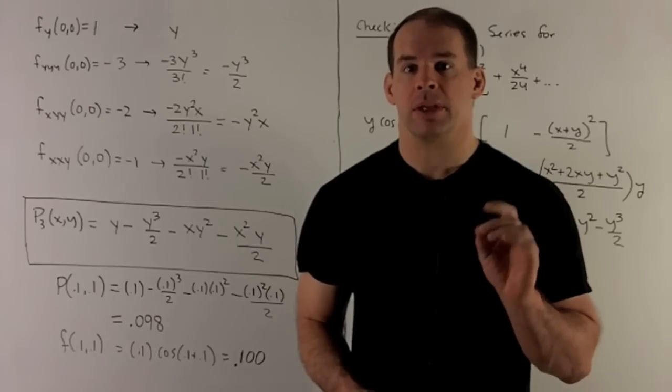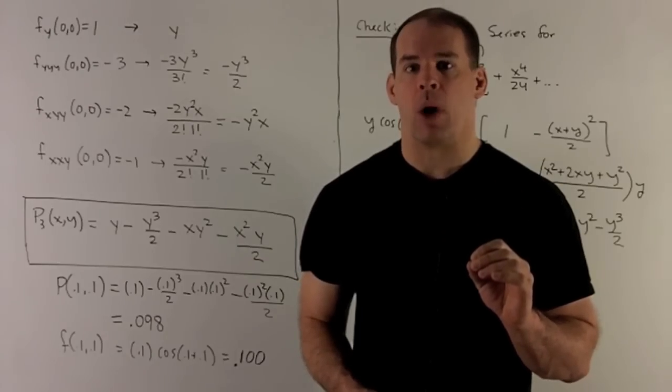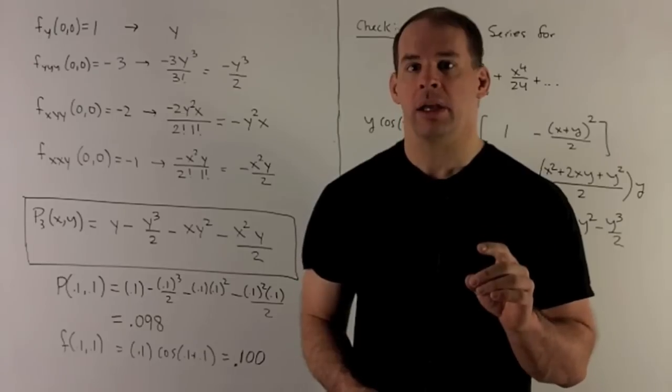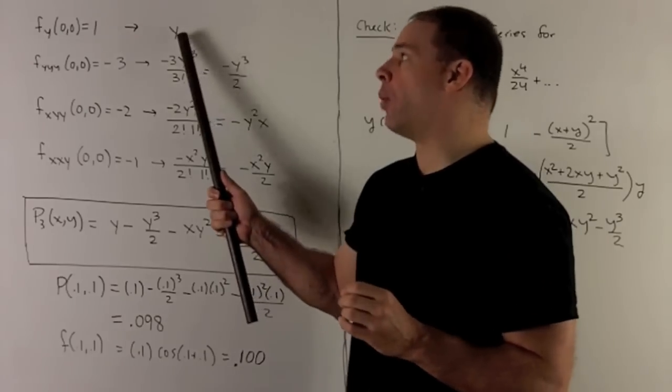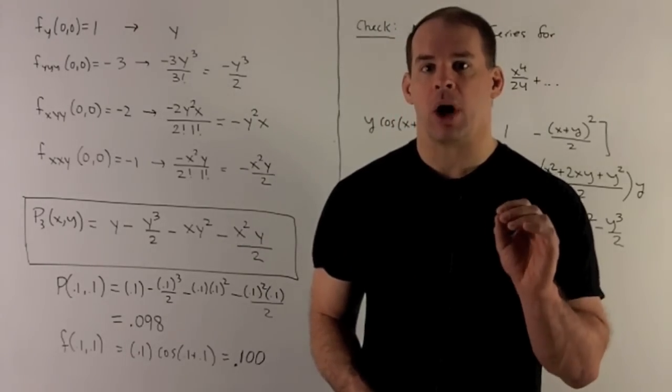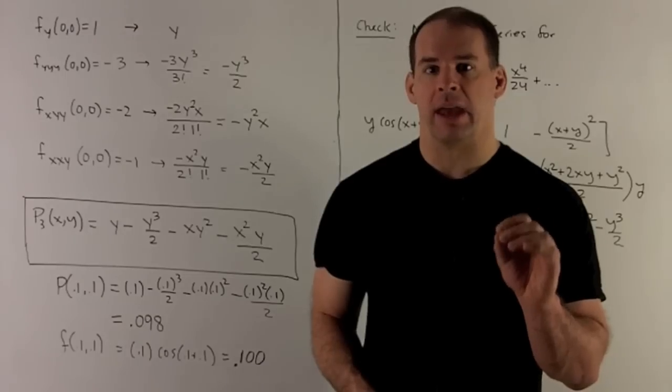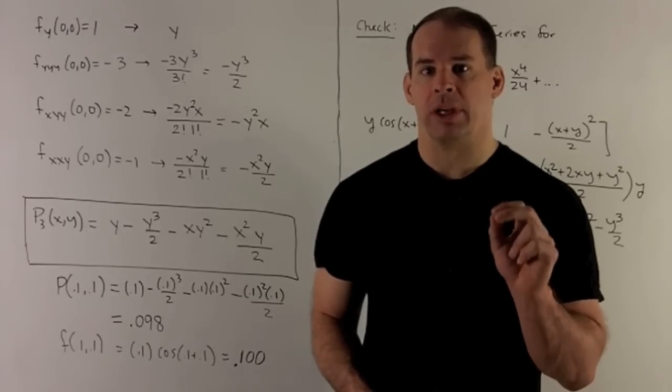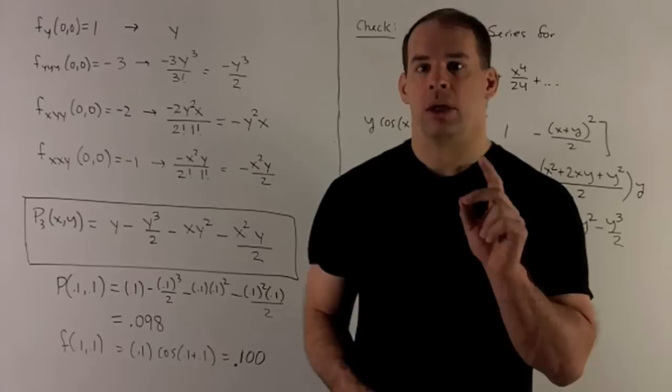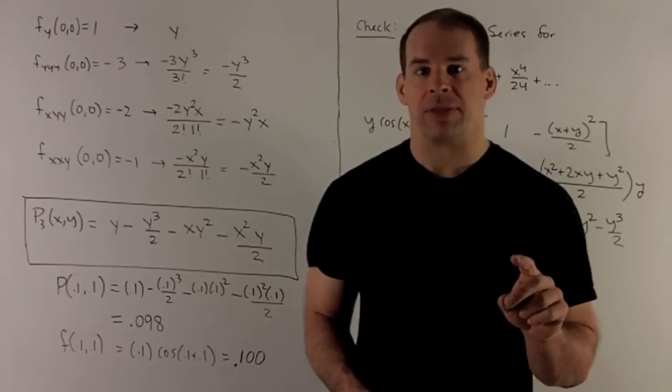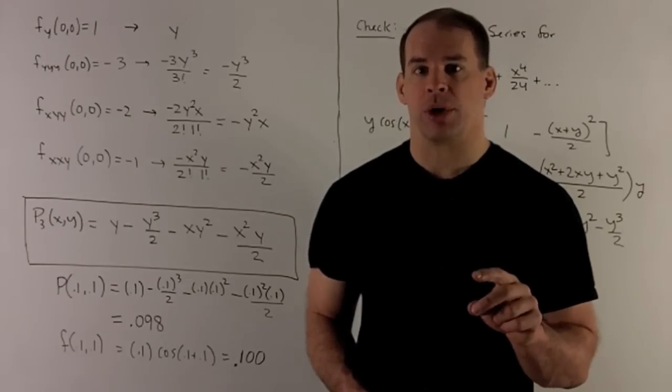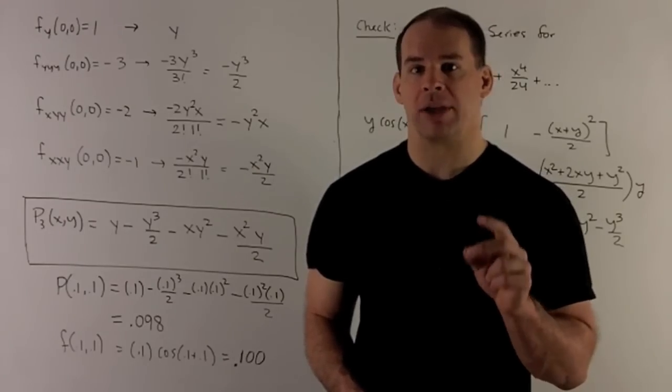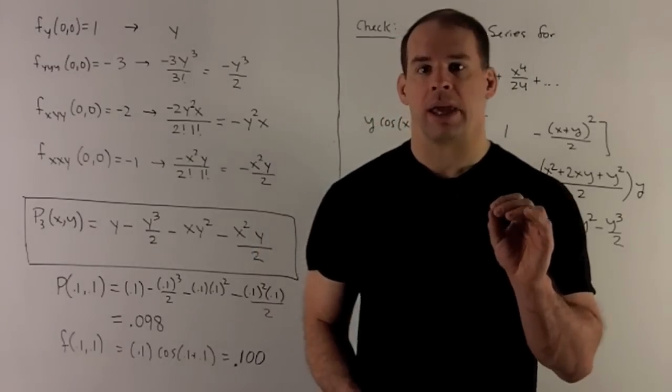Let's put things together. So partial of f with respect to y, we get a 1. So that means we're going to collect a y. Three partials with respect to y, we get a -3. So what do we do? Take our -3, we're going to have a y^3, divide by 3 factorial. 3 factorial is 6. So I get a -y^3/2.